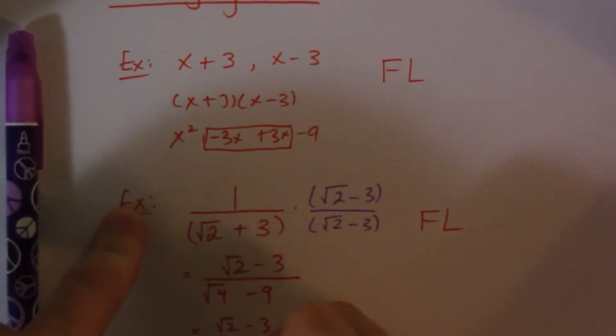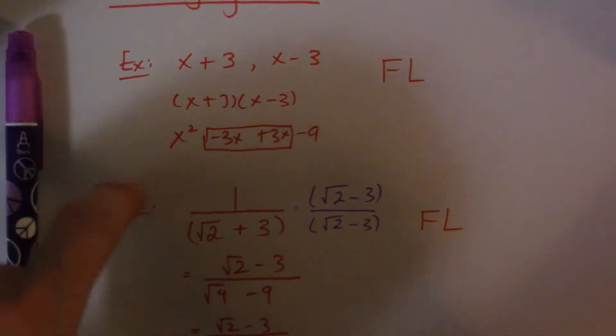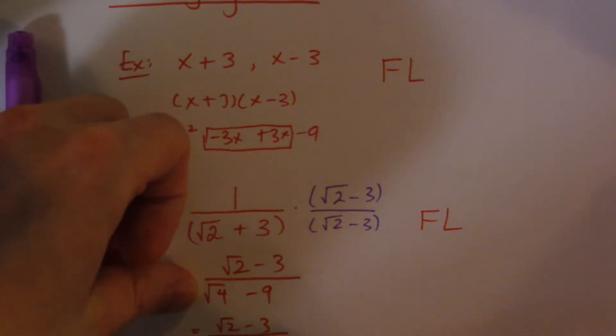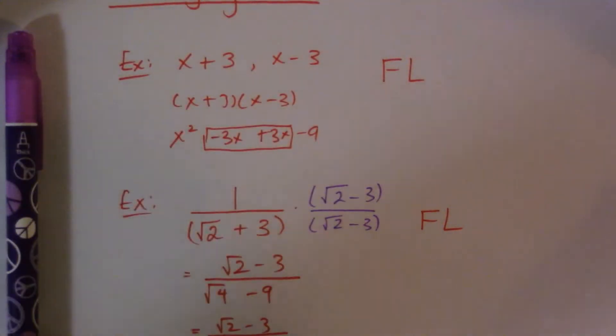So root 2 minus root 3, that doesn't change. And then that becomes 2 minus 9, which is negative 7. Root 2 minus root 3 over negative 7, which we can kind of change to negative root 2 minus root 3 all over 7. And that's it.